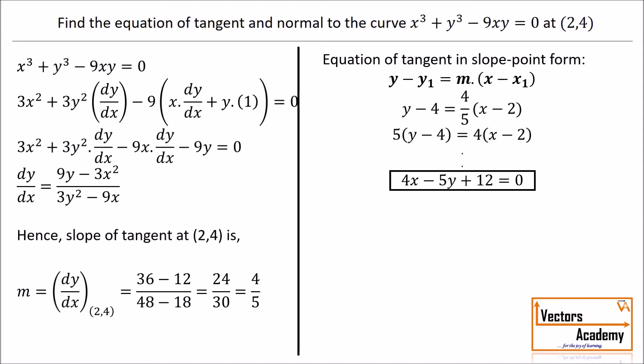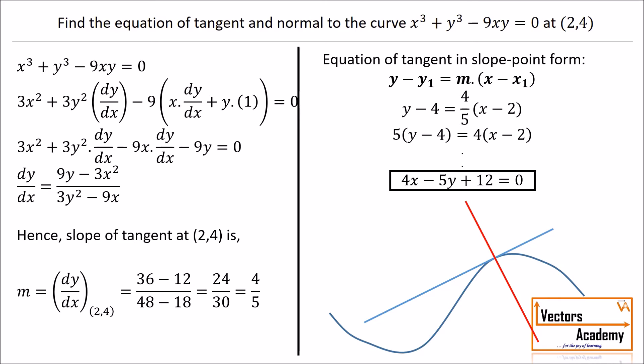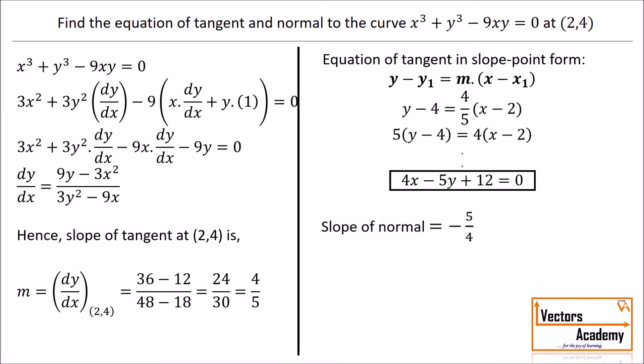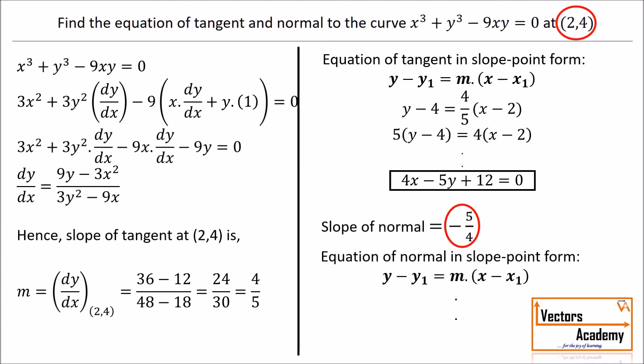Now we find the equation of the normal. The normal is a line perpendicular to the tangent at the same point of contact with the curve. Since the tangent is drawn at (2, 4), the normal passes through the same point but is perpendicular to the tangent. When two lines are perpendicular, their slopes are negative reciprocals of each other. So the slope of the normal is −5/4, the negative reciprocal of 4/5. Using slope-point form with point (2, 4) and slope −5/4, we get the equation of the normal.